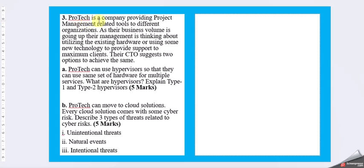Question 3: ProTech is a company providing project management related tools to different organizations. As their business volume is going up, the management is thinking about utilizing existing hardware or using some new technology to support maximum clients. The CTO suggests two options. Part A: ProTech can use a hypervisor so that they can use the same set of hardware for multiple services. What are hypervisors? Explain type 1 and type 2 hypervisors. Part B: ProTech can move to a cloud solution. Every cloud solution comes with some cyber risk. Describe three types of threats related to cyber risk: unintentional threats, natural events, and intentional threats.